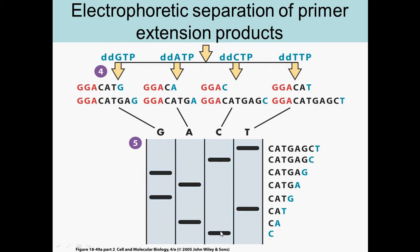You read the gel from the bottom, because the shortest fragment traveled the most through the gel and represents the first nucleotide. So reading bottom to top: the first is C, then A, then T, then G, then A, then G, then C, then T — giving the sequence C-A-T-G-A-G-C-T. You read this 5' to 3', so 5' is at the bottom and 3' is at the top.